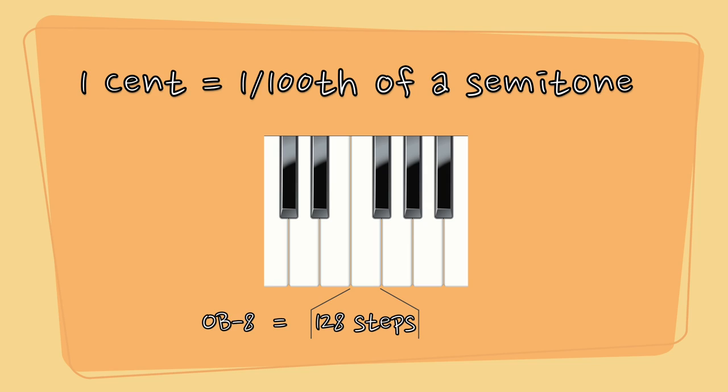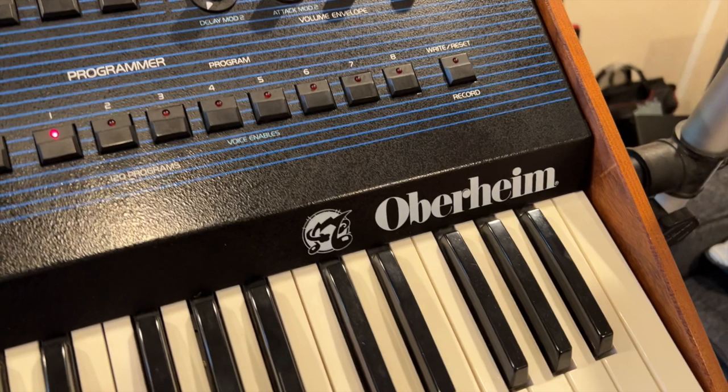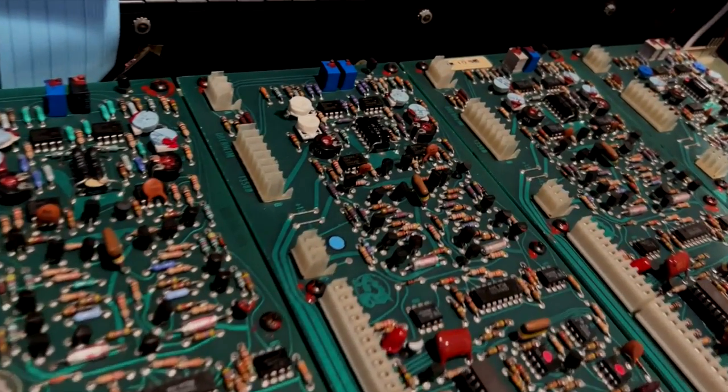The OB-8 has a 14-bit DAC for generating its control voltages, which gives you a pitch resolution of 1/128th of a semitone. This pitch control accuracy is used to ensure that the oscillator tracking stays in tune across the entire keyboard. The OB-X and OB-XA would only tune the pitch of the oscillators on the high C of the keyboard, and the tracking from that point was dependent on how the internal trimmers were set. But with the OB-8, multiple frequencies are calibrated from the microprocessor and the tracking is calibrated in software, enabling the OB-8 to always sound precisely in tune over its entire range.